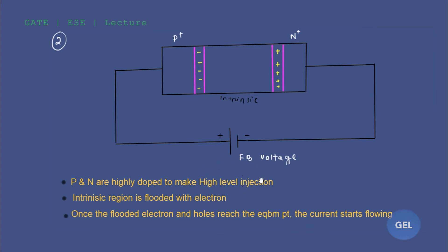After finishing the LED video lecture, we will get into metal-semiconductor contact. Basically, to make an ohmic contact effective, the p-type and n-type are taken as highly doped in nature, and the space in between is large — making it very good for photo detector applications. The intrinsic region is then flooded with electrons and holes.